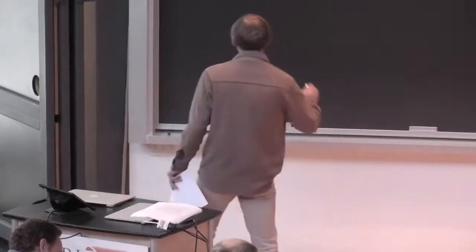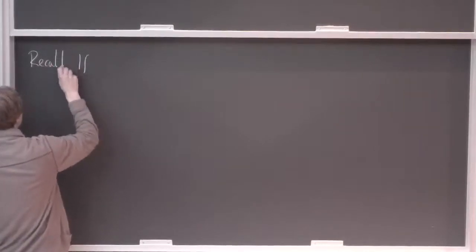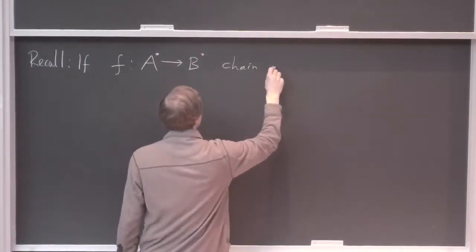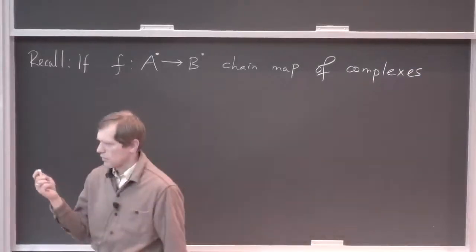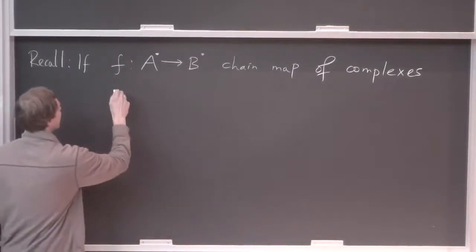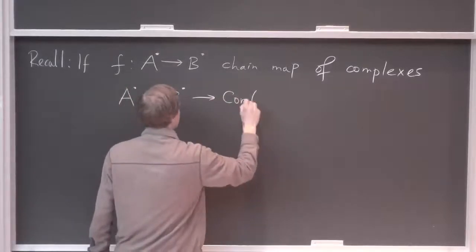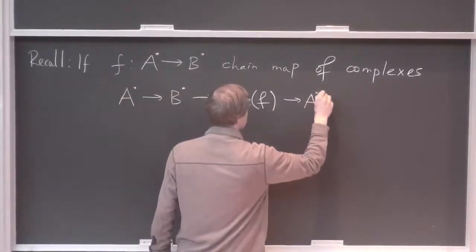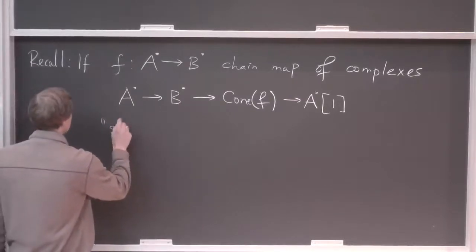So if you have a chain map — recall that if F is a chain map of complexes — then we have the following diagram we discussed to some degree. We have the cone of F, the new complex, and it also maps to A shifted by 1. This is called a standard triangle in a homotopy category.